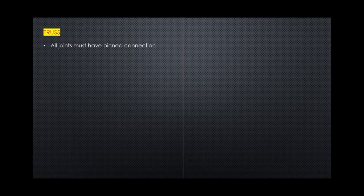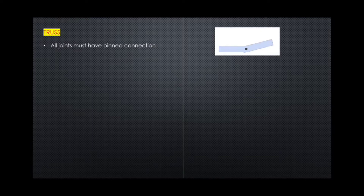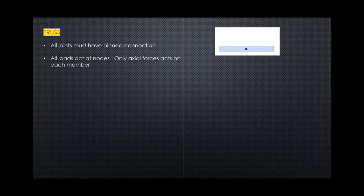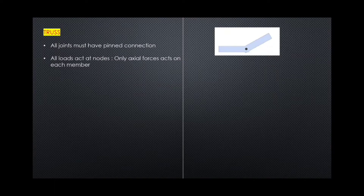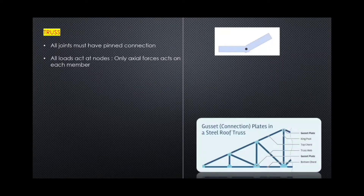All joints must have pinned connections. We have already learned about pinned connections. The pinned connection does not allow rotation — that means no bending moment acts at that joint. In a truss member, only axial forces are allowed to act — that means tension forces and compression forces only.